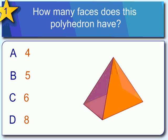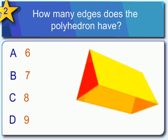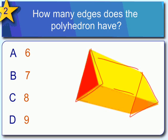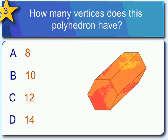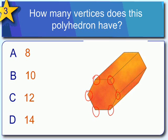How many faces do you see on this polyhedron? If you said five, you're correct — it has one base and then four sides, for five faces total. How many edges does this polyhedron have? You've got three there, three on the other side, and three here, for a total of nine edges. How many vertices do you see? There's a total of six on this side and six on the other side — there would be 12 vertices in this polyhedron.